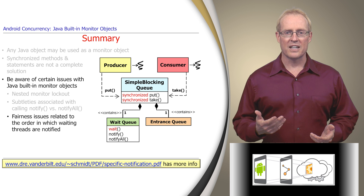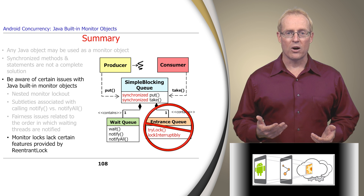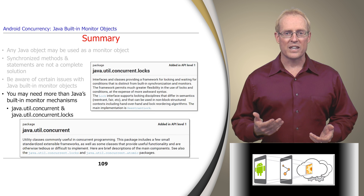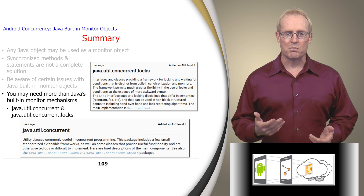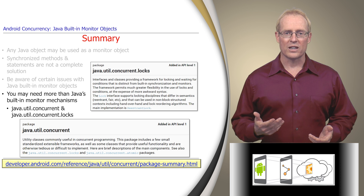Yet another limitation with Java built-in monitor objects is that they lack certain useful features provided by reentrant locks. For example, there's no equivalent to tryLock or lockInterruptibly on a built-in monitor object, which is one reason why Android and the java.util.concurrent package often use reentrant locks instead of built-in Java monitor objects for synchronization needs. Although Java monitor objects are relatively easy to use for simple concurrent programs, production software may often need more than Java's built-in monitor objects.